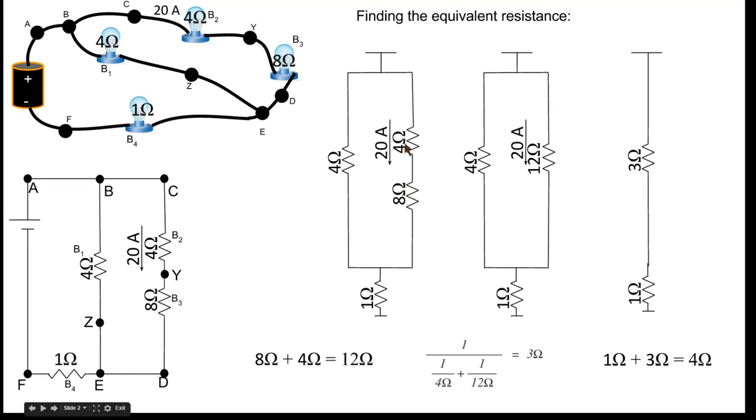This 8 ohm and that 4 ohm are in series, so we can just add them to get 12 ohms right there. Then these two resistors are in parallel. So we would use this equation here to go about figuring out their equivalent resistance. So using this equation, we end up with 3 ohms.